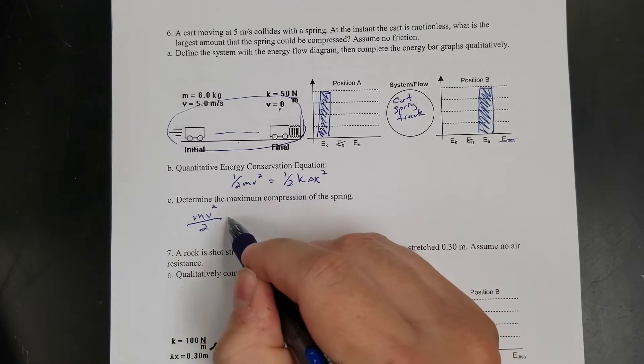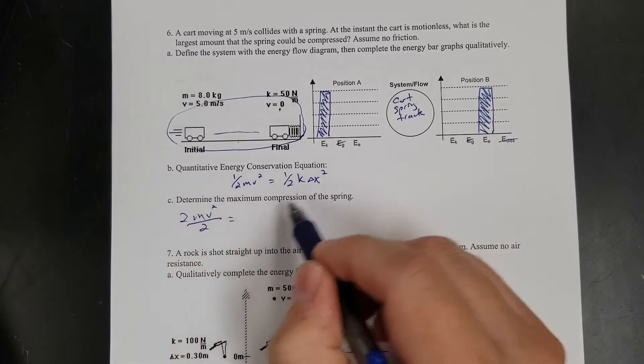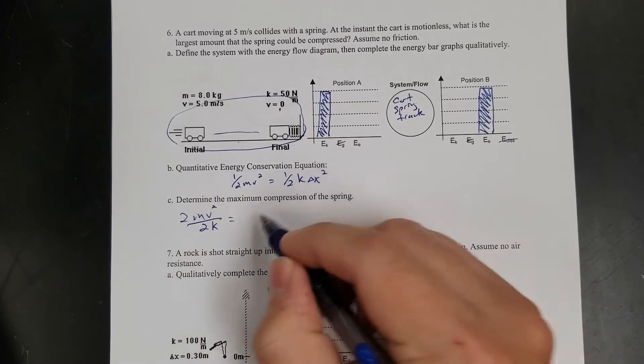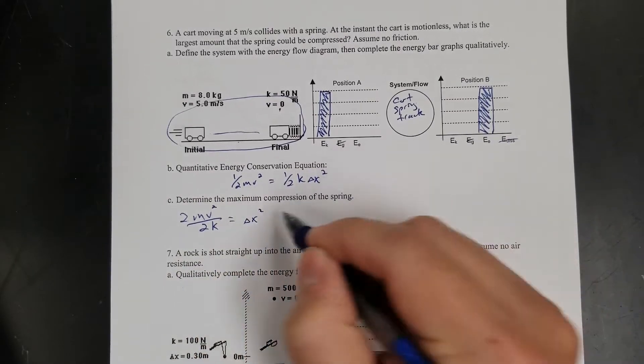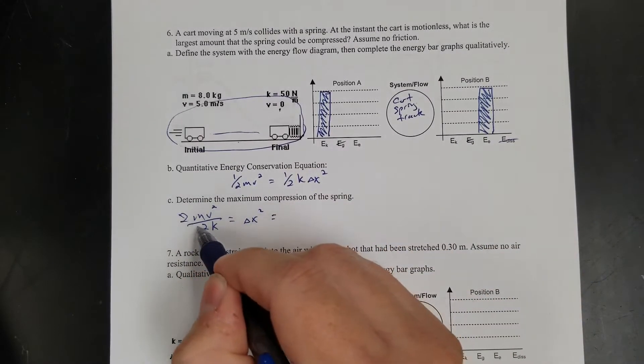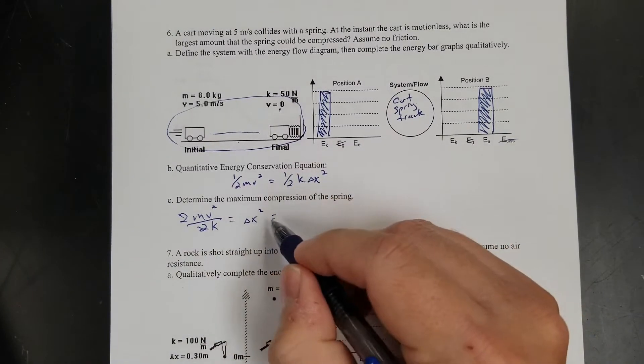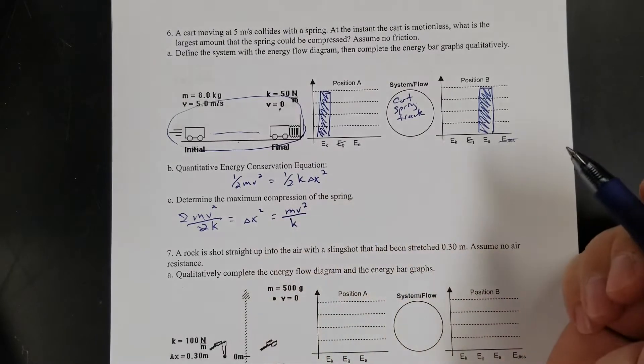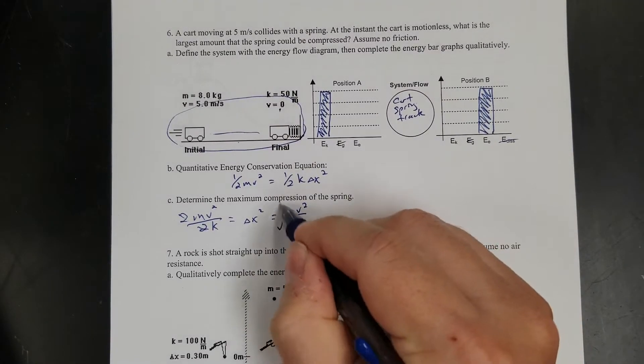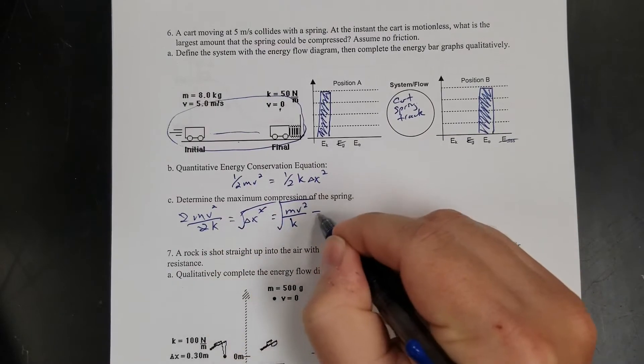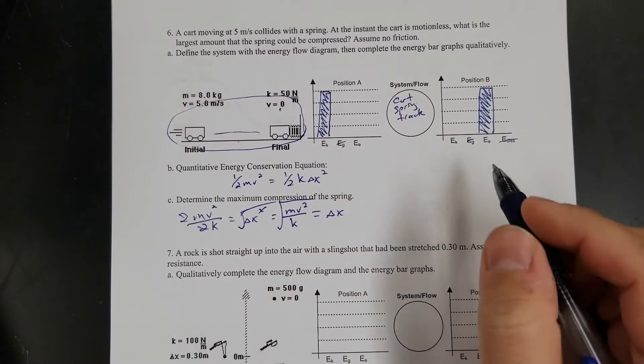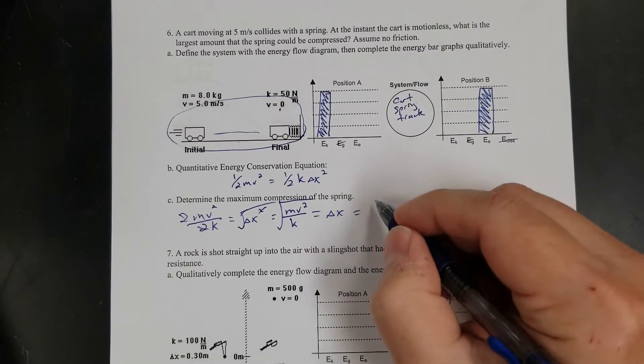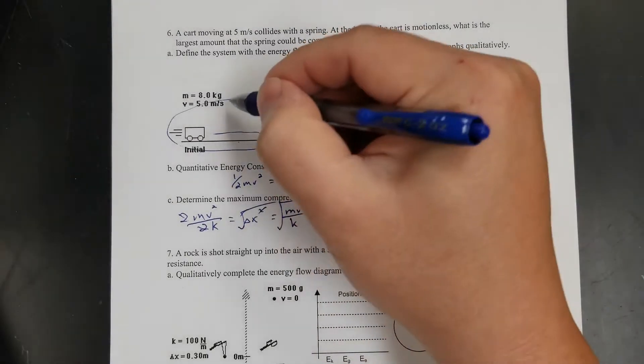Let's algebra this up first. So mv squared over two, I'm going to move that half in there. So half kx squared, so I can multiply two over, which gets rid of that. I'm going to multiply that over, and then I'm going to divide by k. And that'll give me delta x squared. So delta x squared equals mv squared over spring constant. So if I square root this, it gets rid of that. So that equals delta x.